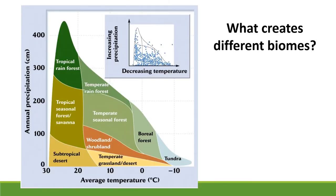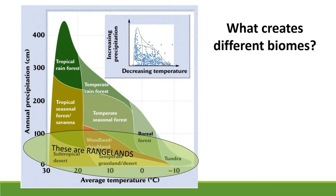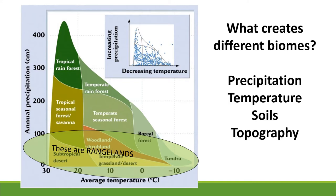To figure out where different biomes occur, it's common to plot them on a graph of precipitation versus temperature. Notice on the x-axis, temperature is high on the left and low on the right. Tropical rainforests occur where temperature is fairly high and precipitation is very high. Boreal and taiga forests occur where temperature is low but precipitation is still very high. Rangelands occupy the bottom part of this graph — tropical deserts, grasslands, tundra, woodlands, and scrublands — they don't get enough precipitation to be forests. Precipitation, temperature, soils, and topography all influence where biomes occur across the globe.